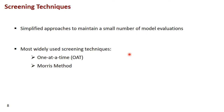Let's first look at local sensitivity analysis and the screening techniques. These are really simple approaches, very easy to understand, requiring very few model evaluations, but we also have to discuss their limitations. There are many methods, but I will focus on basically two: the one-at-a-time analysis (OAT), and the Morris method.